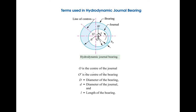Today we will study the important terms used in hydrodynamic journal bearing. Hydrodynamic journal bearings are also called thick film bearings. In these bearings, the working surfaces are completely separated from each other by the lubricant. In the figure, O is the center of the journal and O' is the center of the bearing. Capital D is the diameter of the bearing, small d is the diameter of the journal, and L is the length of the bearing. The journal is the moving part and the bearing is the fixed part. The journal rotates in the anti-clockwise direction inside the bearing.